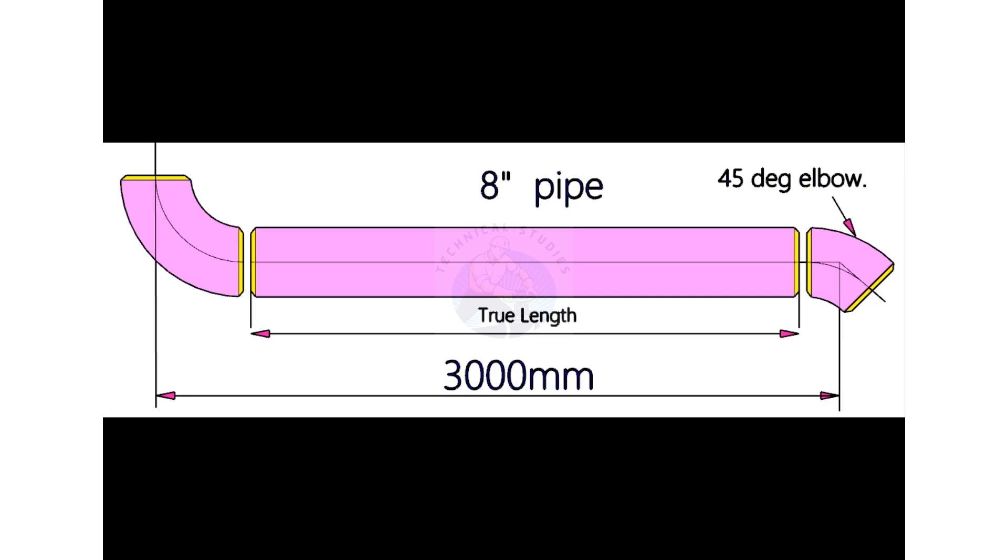To calculate the take-off of a 45 degree elbow, multiply the diameter in inches by 0.4142.